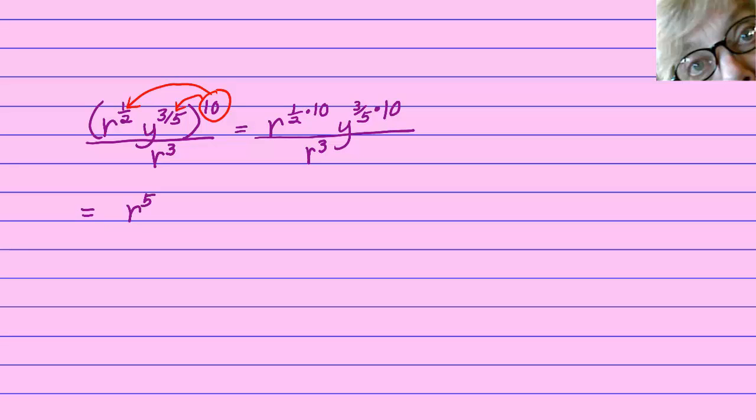Well, let's see. One-half times ten is five, and three-fifths times ten is six.